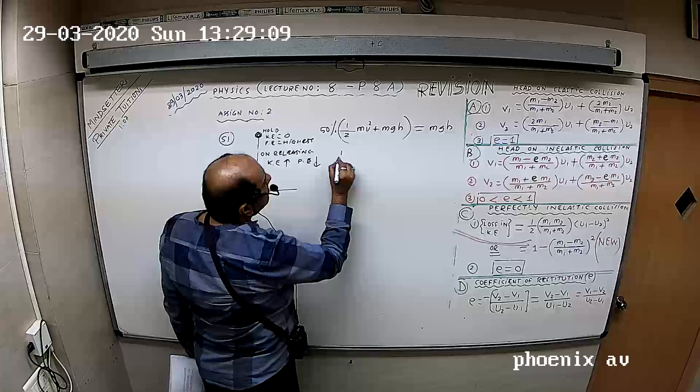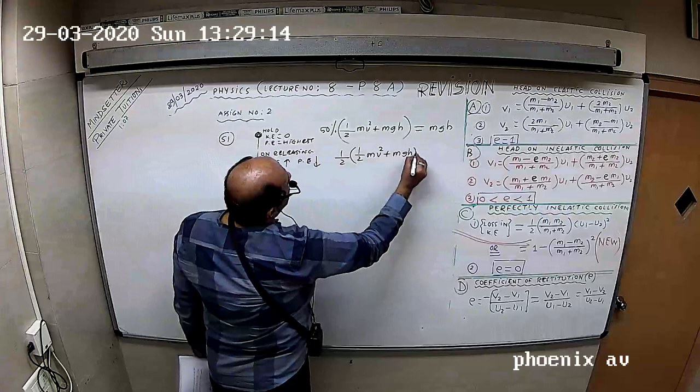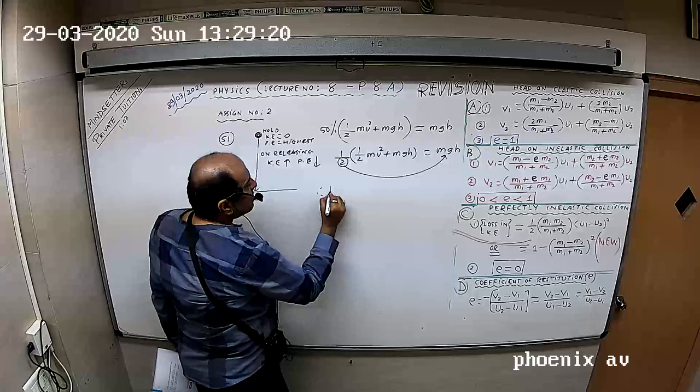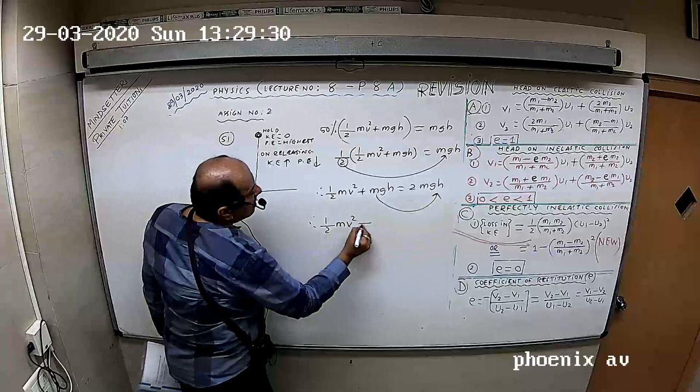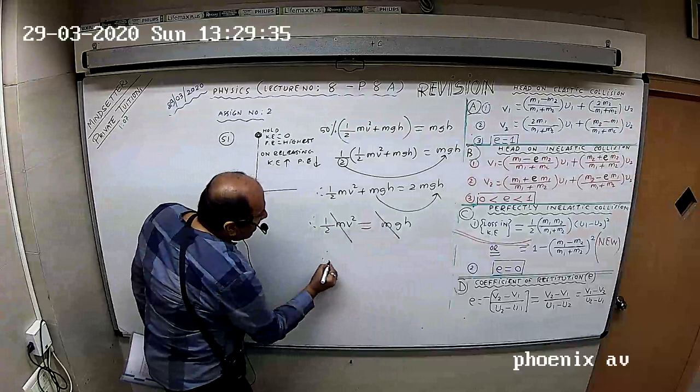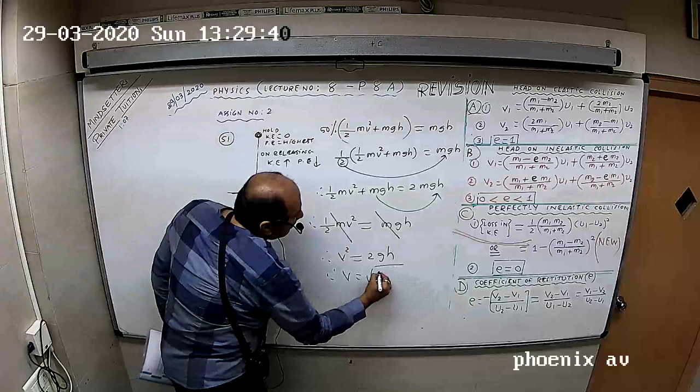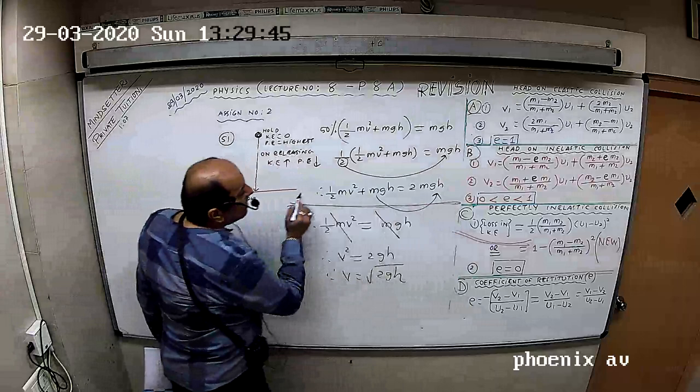What remains is ½(½MV² + MgH). This equals MgH. Taking 2 to the other side: ½MV² + MgH equals 2MgH. Taking MgH to the other side: ½MV² equals MgH. I have told you repeatedly: V equals root of 2gH.